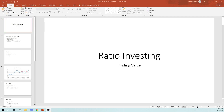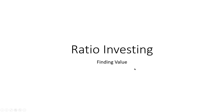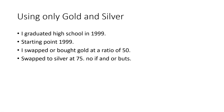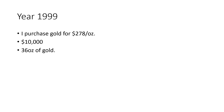Let's jump in and look at ratio investing using only gold and silver. I graduated high school in '99, so that's our starting point — roughly 1999 to 2000, about a 20-year scenario. I swapped or bought gold at a ratio of 50 and swapped to silver at 75 — no ifs, ands, or buts. In 1999, we purchased gold at $278 an ounce. Using $10,000, we got 36 ounces of gold.